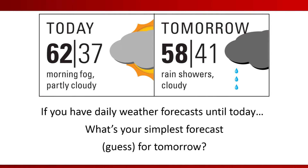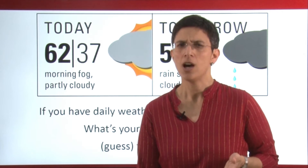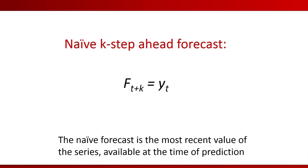What does it mean to generate a naive forecast? If we have the daily weather information until today, what will be the simplest forecast for tomorrow? Well, obviously you'll take the most recent day and say probably tomorrow will be very similar to today. So the naive forecast is just going to be your most recent value that's available at the time of prediction.